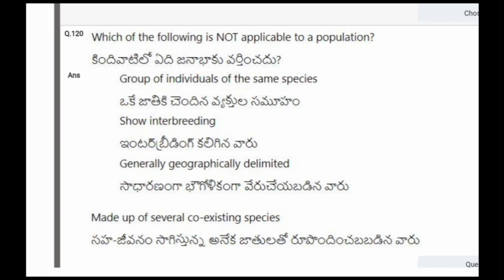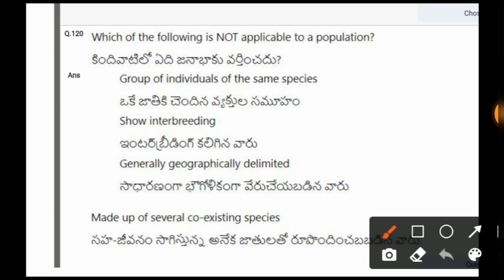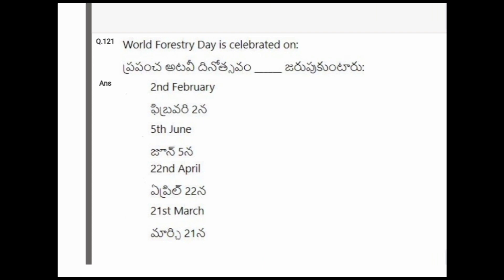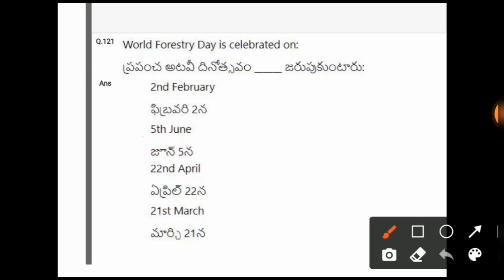Next question: Which of the following is not applicable to the population? The options are: group of individuals of the same species showing interbreeding; generally geographically delimited; made up of several coexisting species. The correct option is the fourth one, that is made up of several coexisting species.